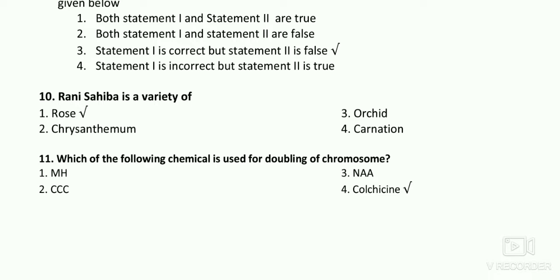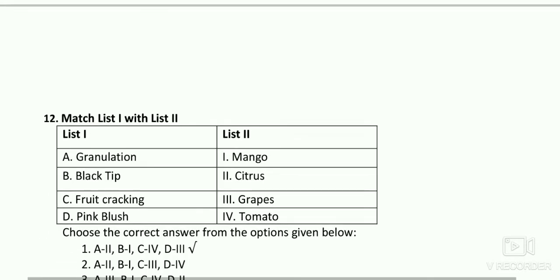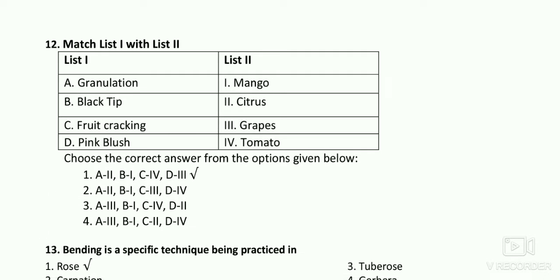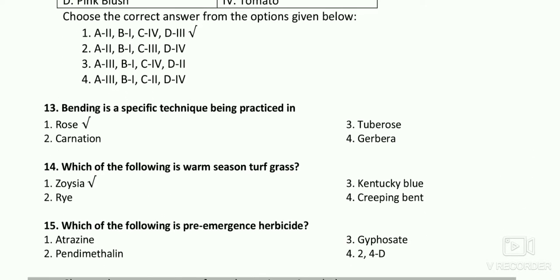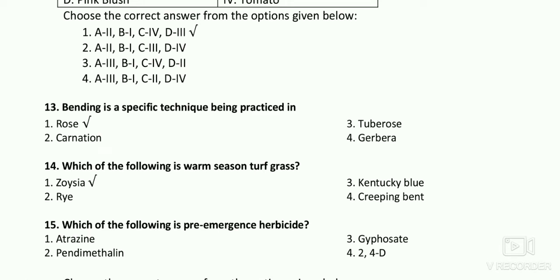The next matching question covers: glassiness, black tip, fruit cracking, and pink blush. Blush refers to wine made from red wine grapes. Bending is common in rose.